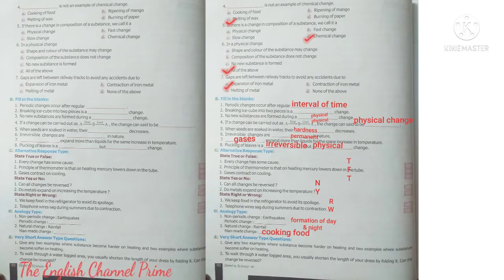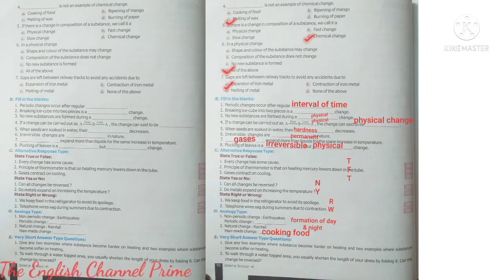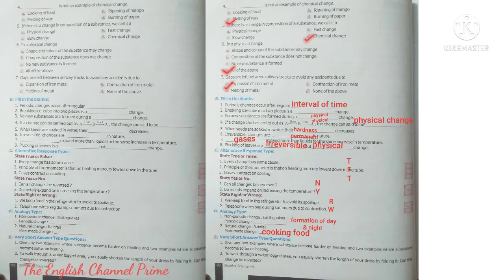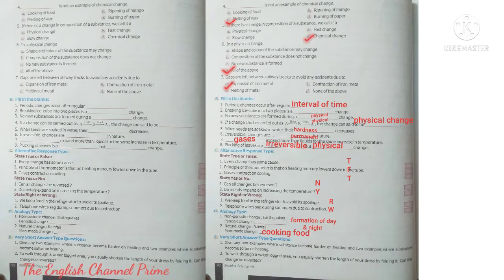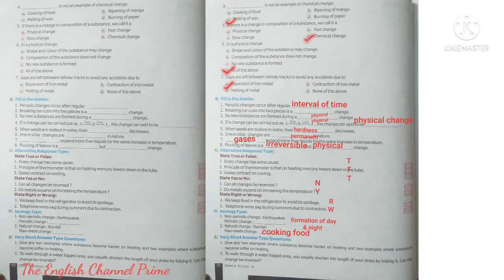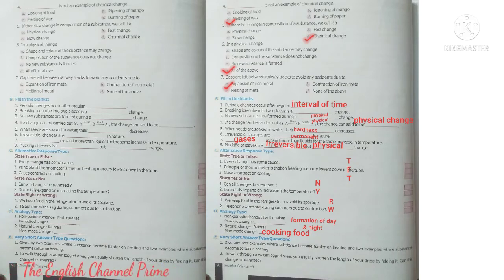State yes or no. Question one: Can all the changes be reversed? No, it is not true. Question two: Do metals expand on increasing the temperature? Yes, true. State right or wrong. Question one: We keep food in the refrigerator to avoid its spoilage — yes, right. Question two: Telephone wires sag during summers due to contraction — no, it is wrong.